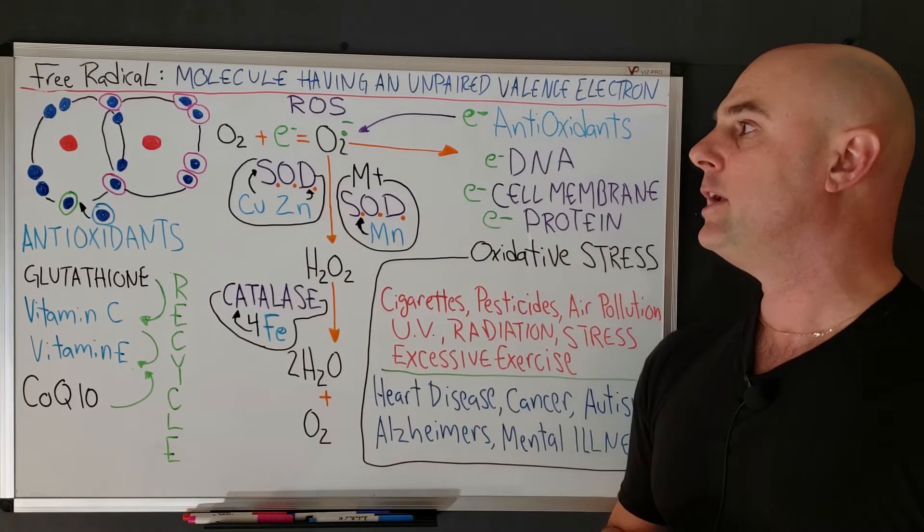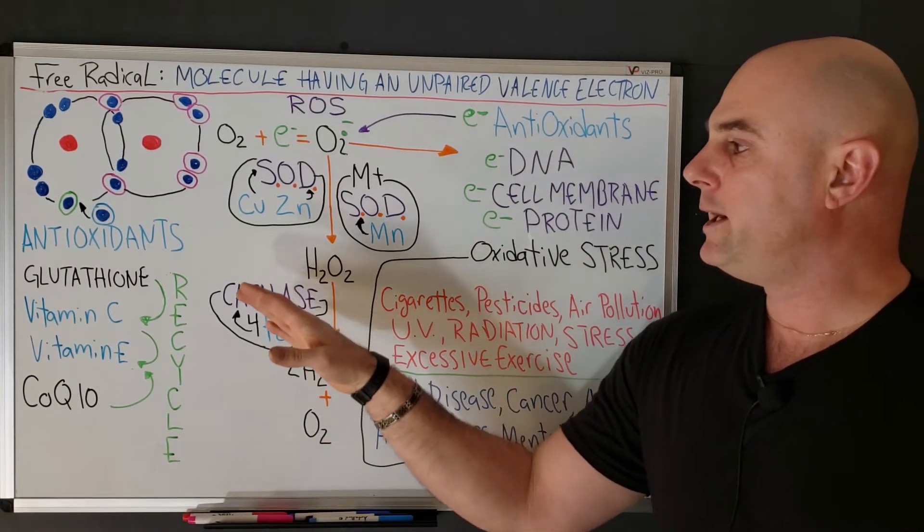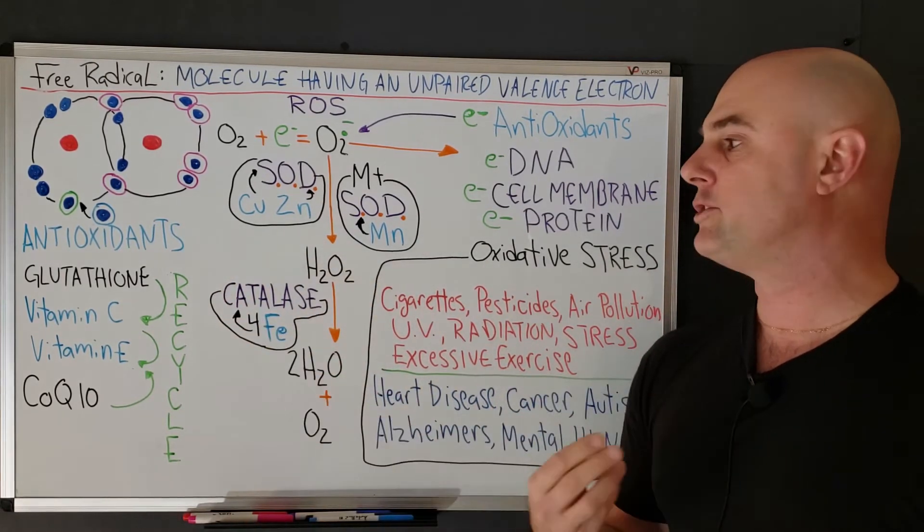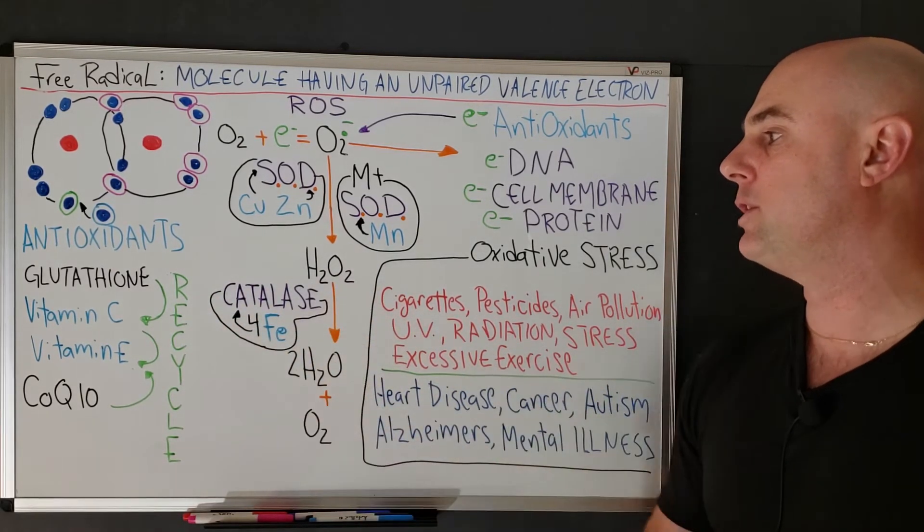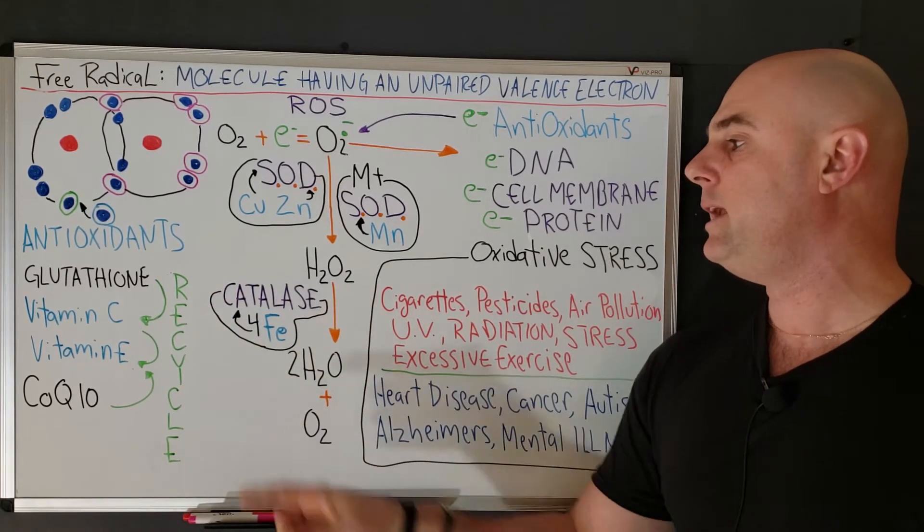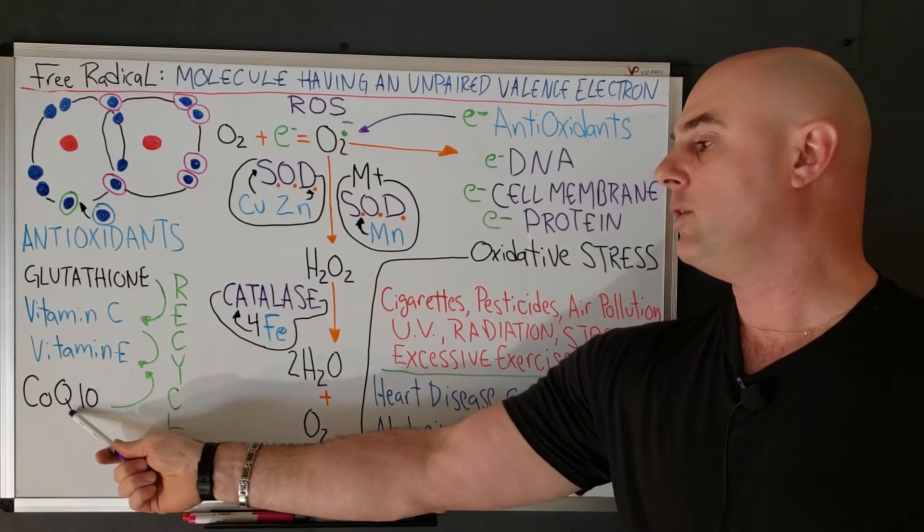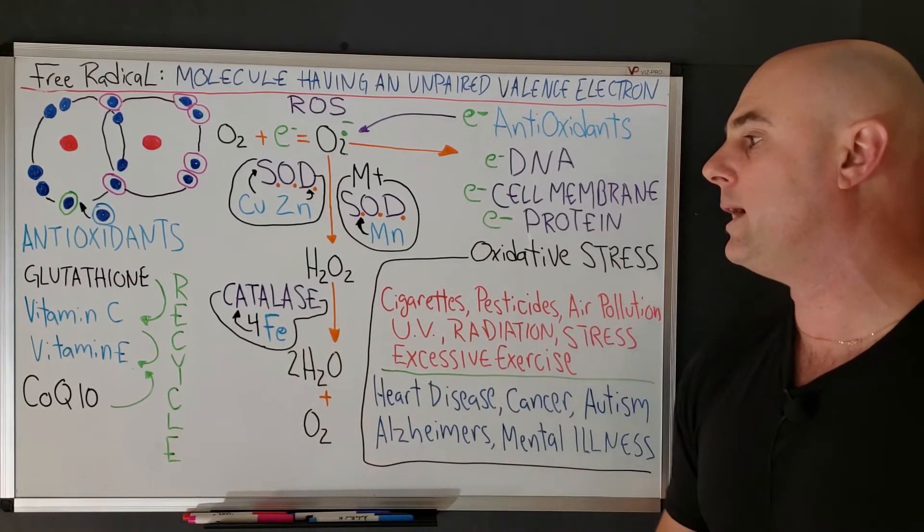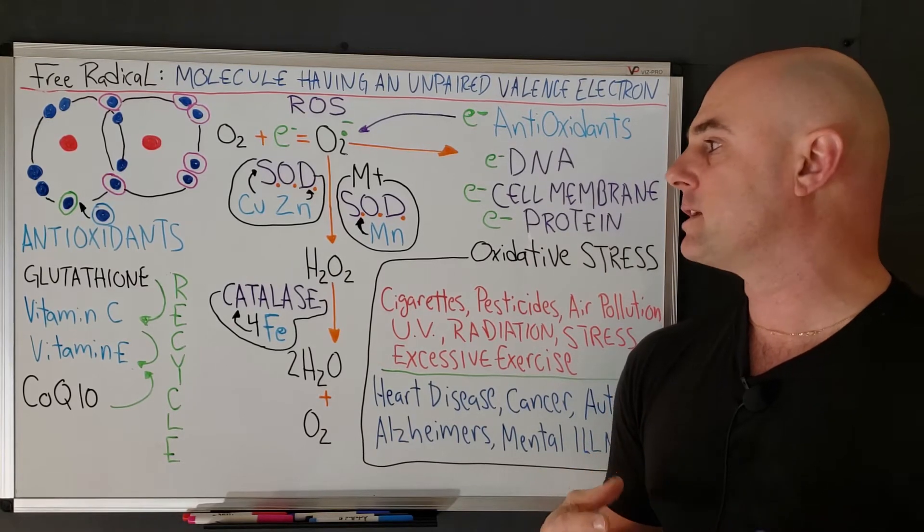That's one way we can neutralize the effects of free radicals, by having enough antioxidants to donate electrons to this unpaired valence electron. I have just a few antioxidants here: glutathione, which is a tripeptide, vitamin C, vitamin E, and CoQ10. Glutathione actually has the ability to recycle vitamin C, and vitamin C can recycle our vitamin E. CoQ10 is another antioxidant that can recycle vitamin E as well. You can see how some of the antioxidants work synergistically with each other.